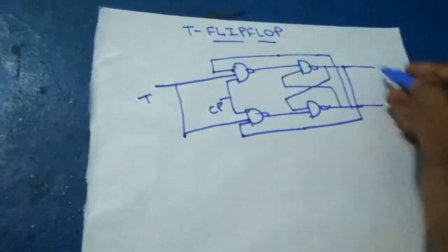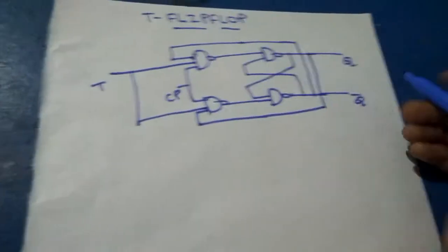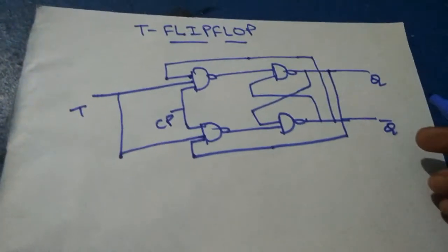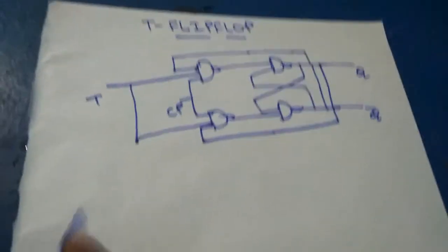This is the clock pulse. Here, T, Q, Q bar are the outputs. This is the logic diagram of the T flip-flop. Now we will see the truth table.